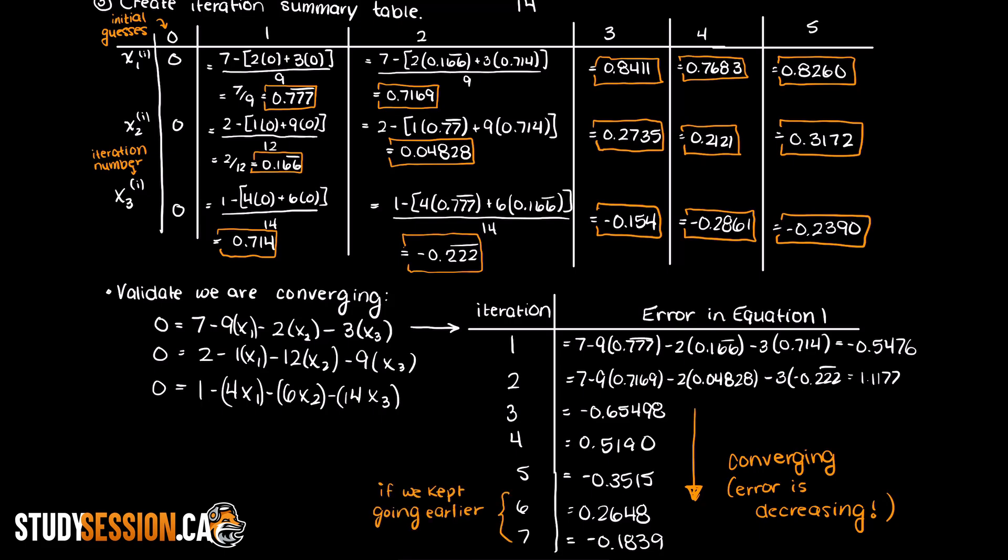And this makes sense as we know that this should happen since we validated earlier that our matrix is diagonally dominant. In the next few videos I am going to show you how to perform Jacobi iteration in Microsoft Excel and using Python as programming is much easier and far less tedious way to solve iterative numerical methods.